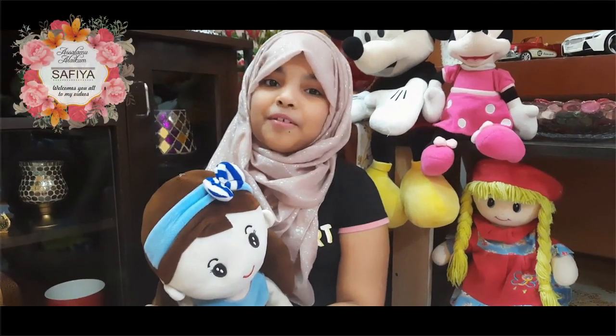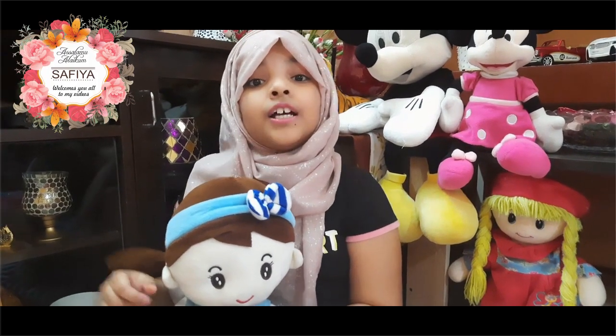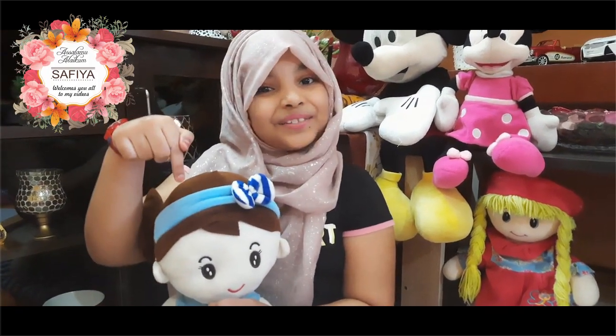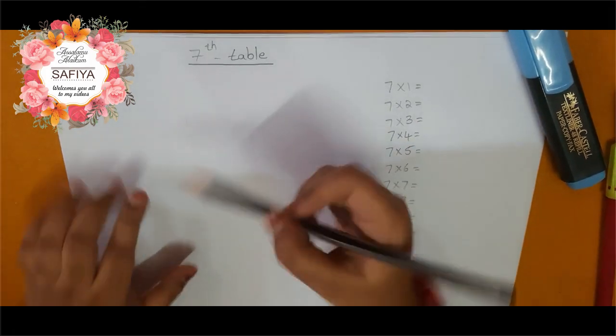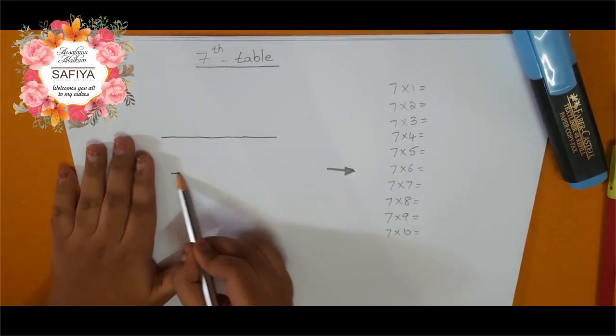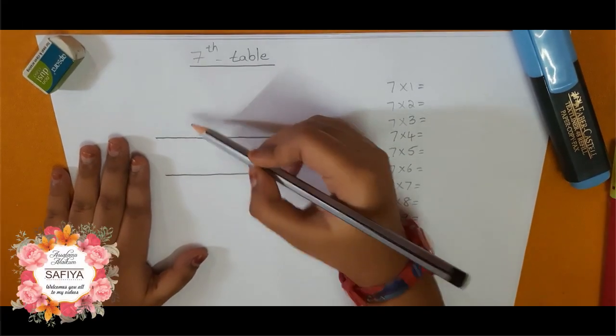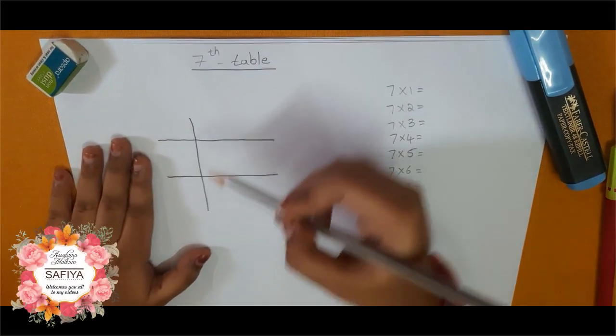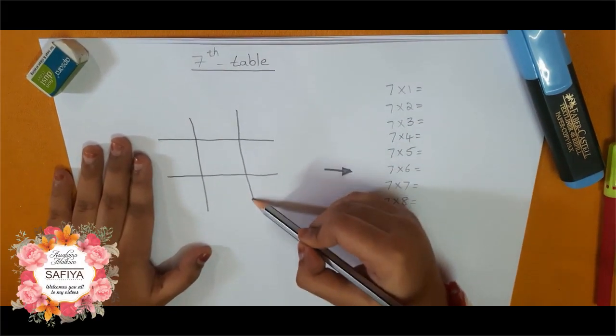Hello friends, welcome back to my video. How are you all? Today I am going to show you one tricky seven table. So let's start. First, horizontal line, once again horizontal line, vertical line, once again vertical line.